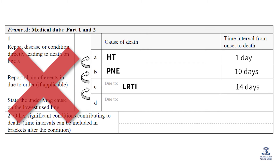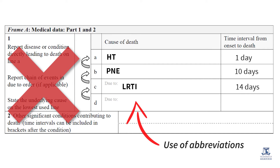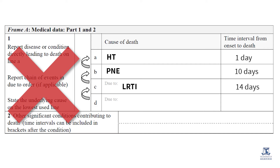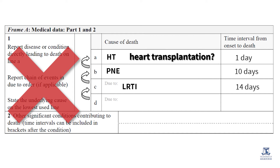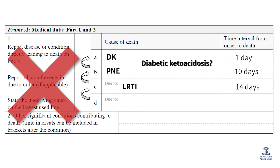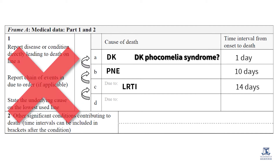A similar outcome is also possible when abbreviations are used for medical conditions. Since most abbreviations are not standard, it's very likely that acronyms are interpreted differently by different people. For example, 'HT' may reflect hypertension, heart transplantation or hormone therapy. 'DK' may mean diabetic ketoacidosis or DK focamelia syndrome.